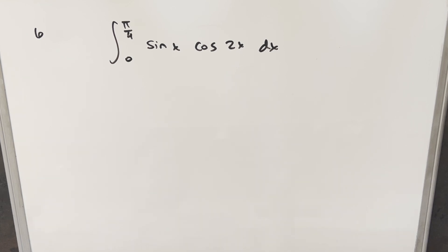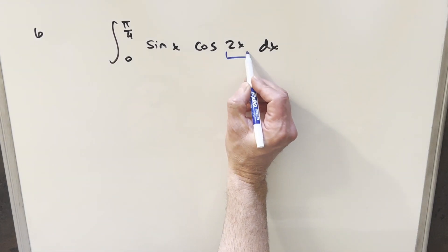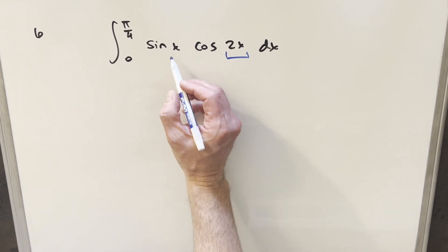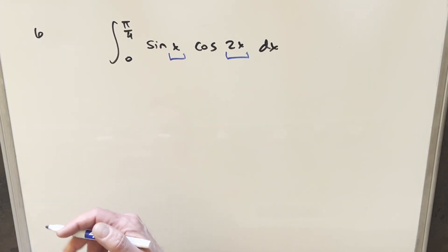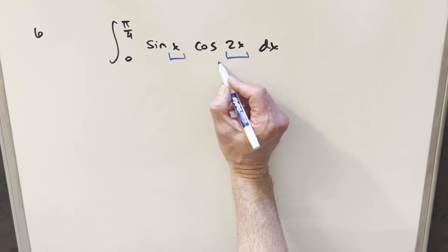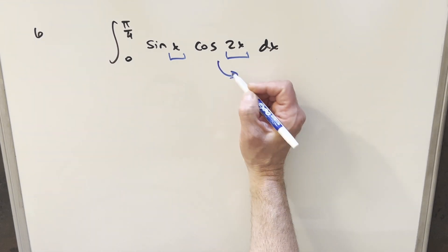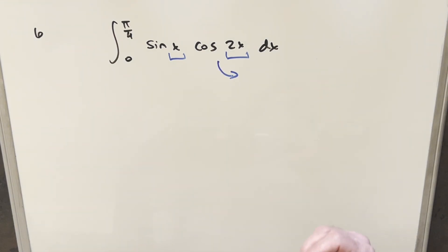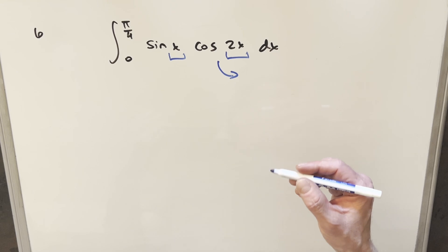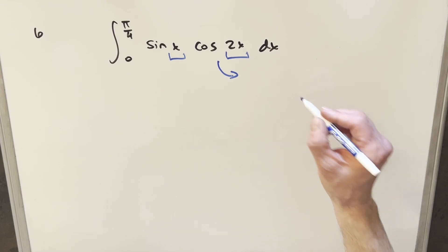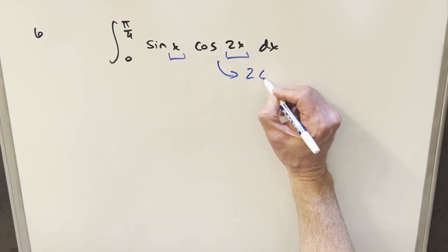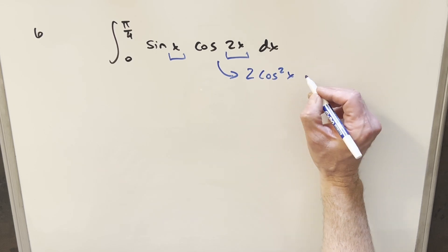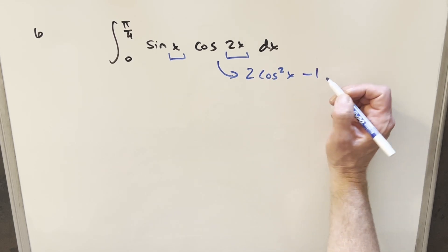The first thing I notice here is just the fact that our angles don't match. I want everything to have an angle of x or 2x. My preference is to use the double angle formula for cosine of 2x. We could do this a few different ways, and what I want to use is the identity that cos(2x) = 2cos²x - 1.